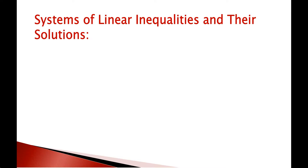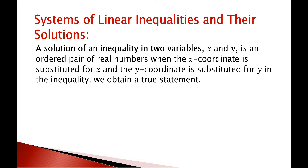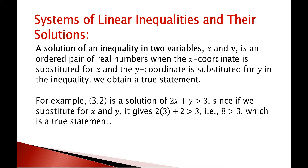Solutions of a system of linear inequality always come in an ordered pair. When you substitute the X coordinate for X and the Y coordinate for Y, and it obtains a true statement, then that ordered pair is the solution of this inequality. For example, (3, 2) is a solution of the linear inequality 2X plus Y greater than 3, since plugging 3 in for X and 2 in for Y gives us 8 greater than 3, which is a true statement.